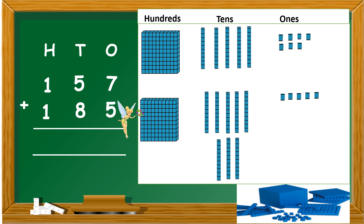Now, we know that 7 added to 5 will give us 12. So, we have 12 ones. But, we cannot put the 12 ones in the ones column. So, we are going to take out 10 ones to regroup it. We know that 10 ones make up 1 ten. So, count with me: 1, 2, 3, 4, 5, 6, 7, 8, 9, 10. We trade it for 1 ten because 10 ones make up 1 ten.